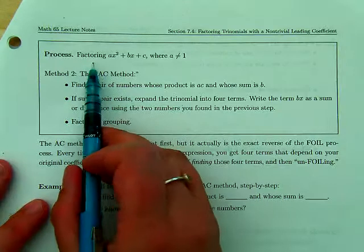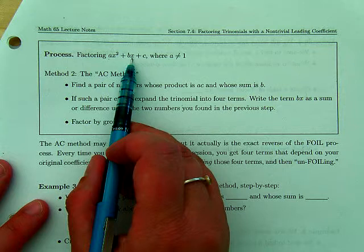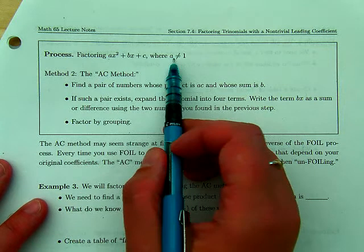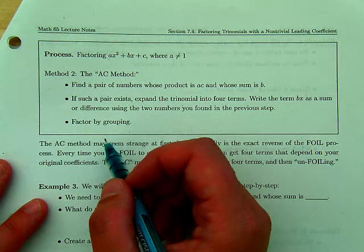So leading coefficients that are not one. So what we're talking about is factoring a trinomial that's in the form ax² + bx + c, where a is not equal to one. That's why it's not, that's why it's non-trivial, right?